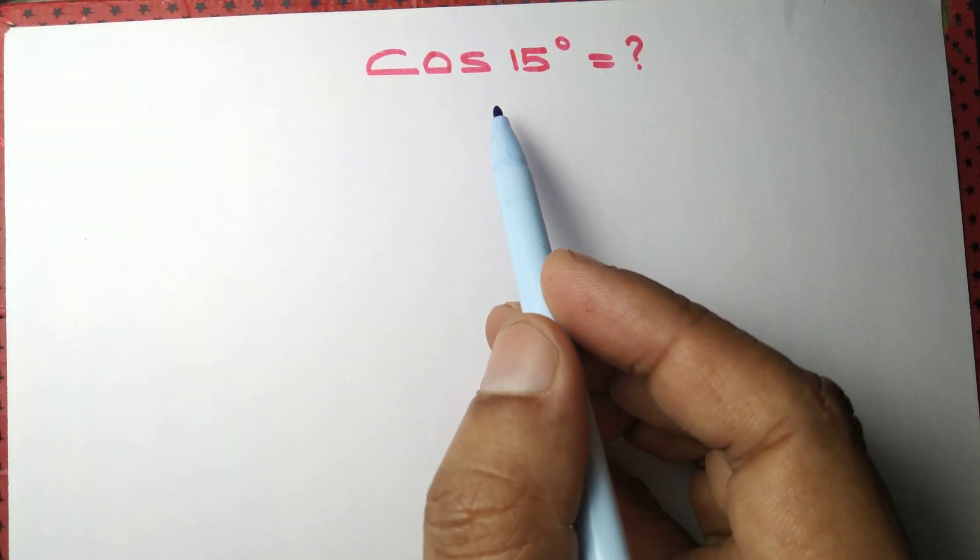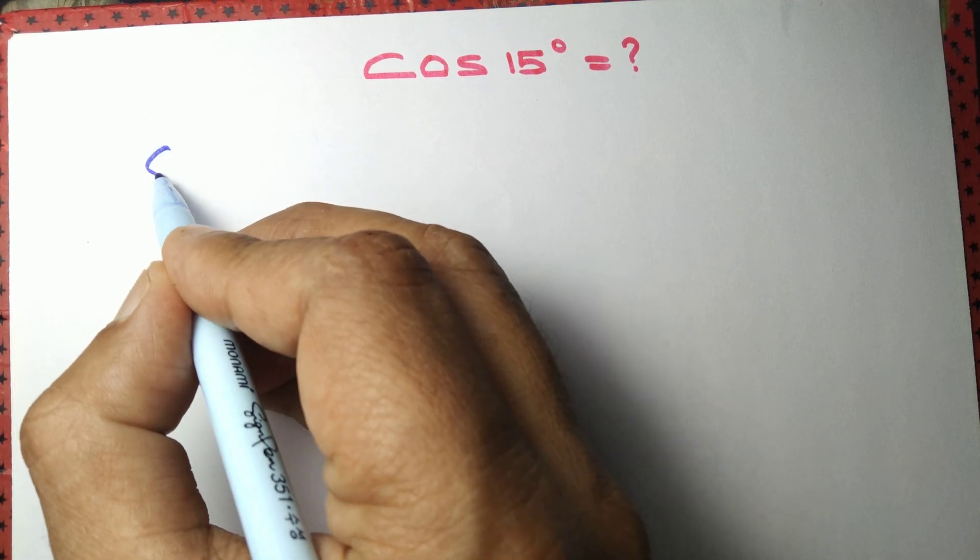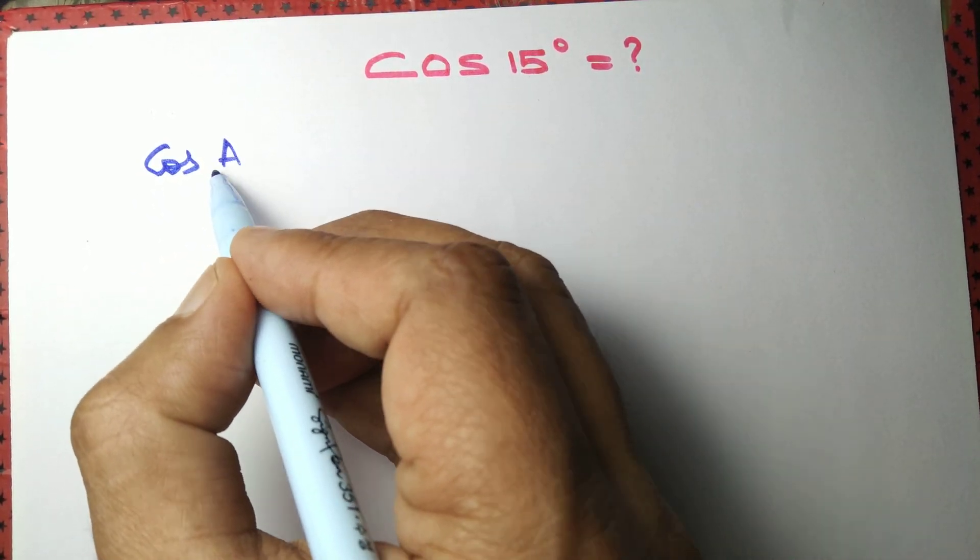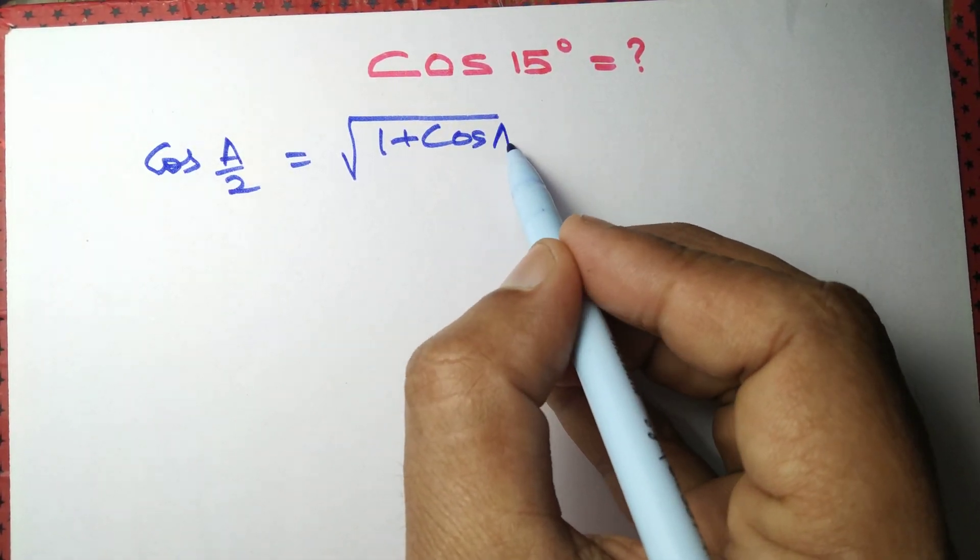Let's find the value of cos 15° using two different methods. First method: we know that cos(A/2) equals the square root of (1 + cos A) divided by 2.